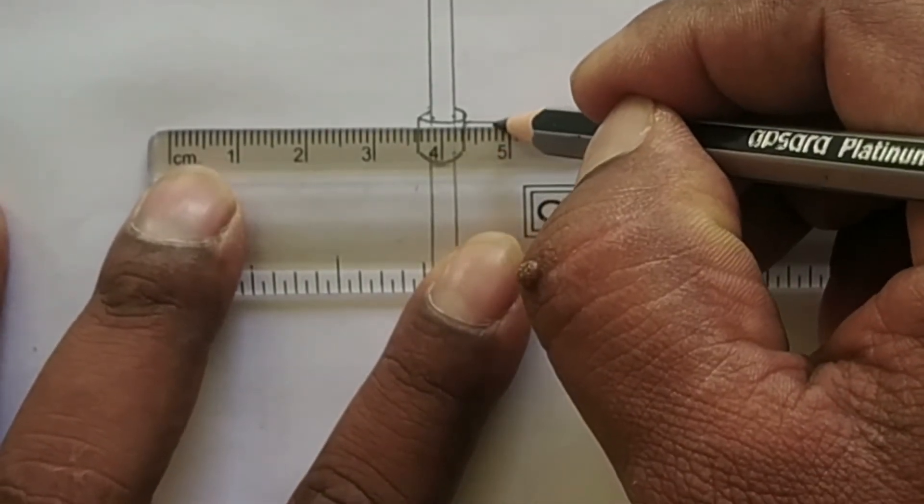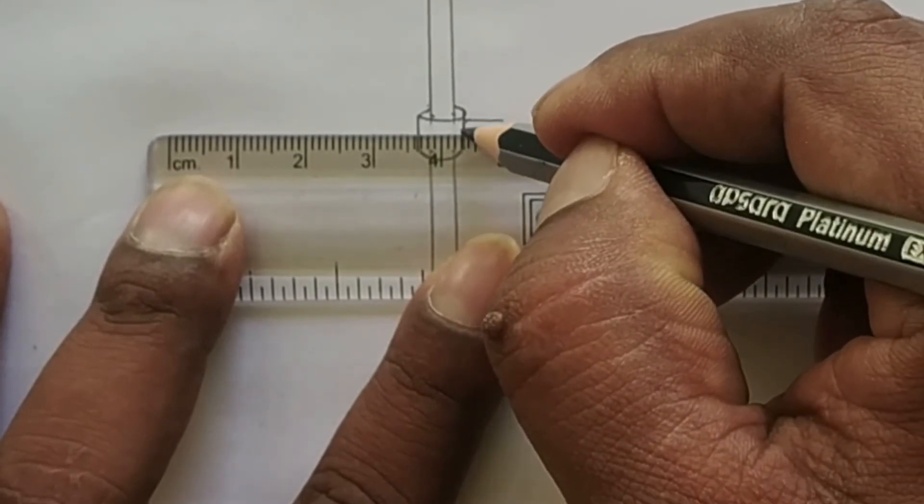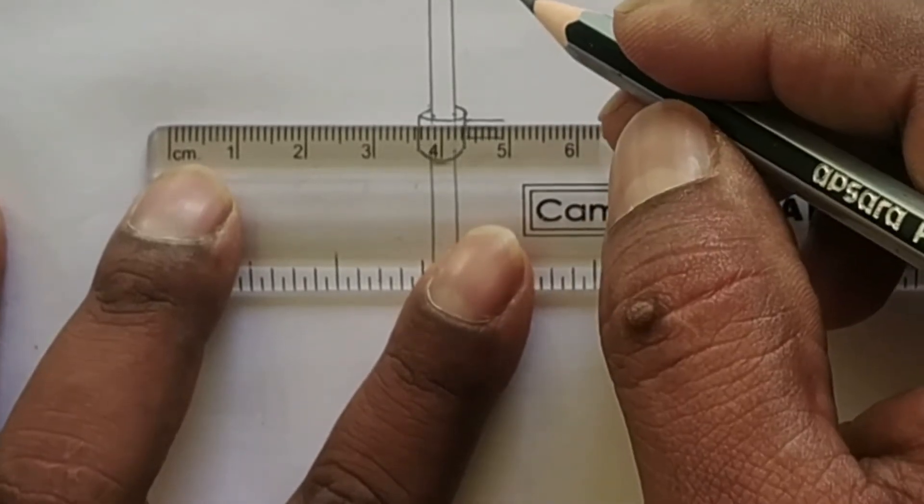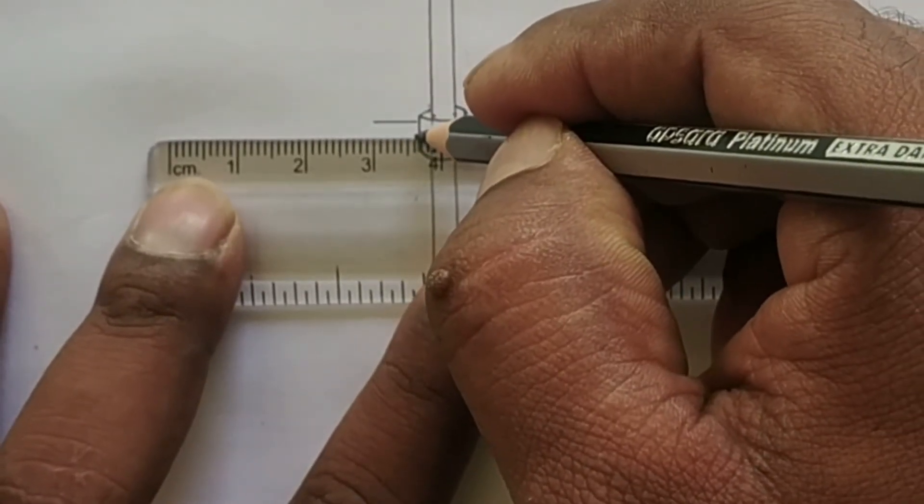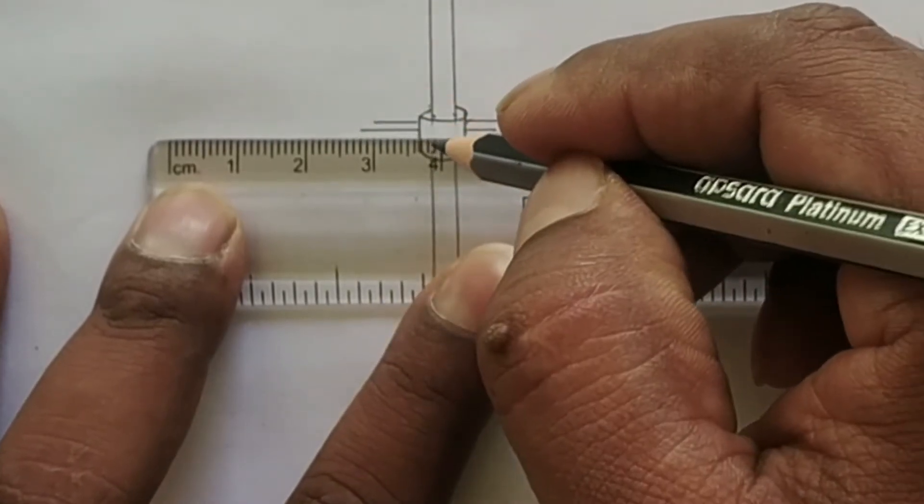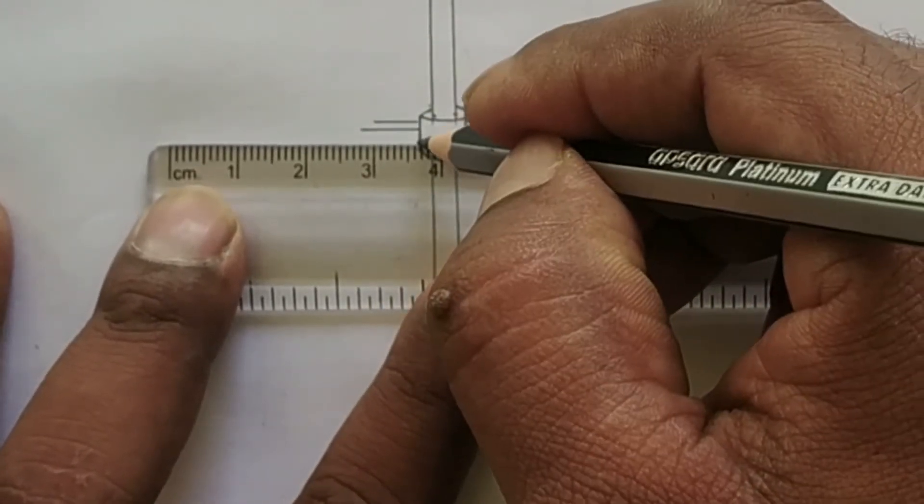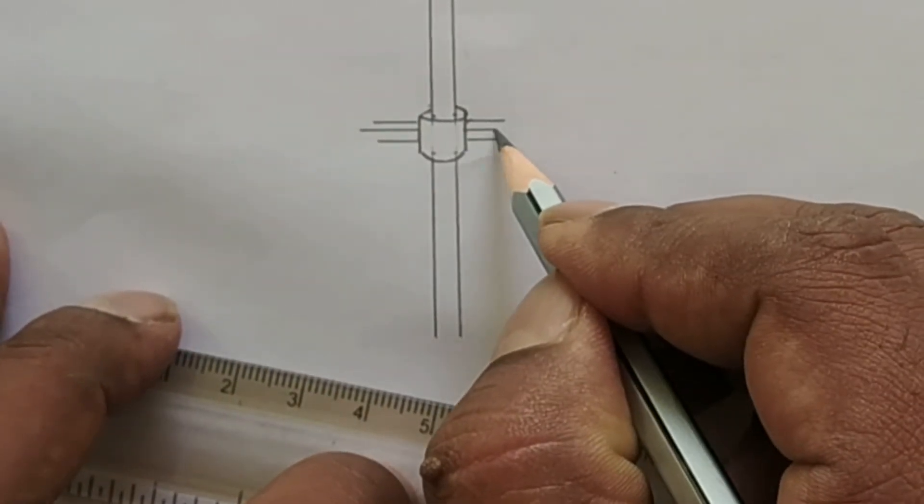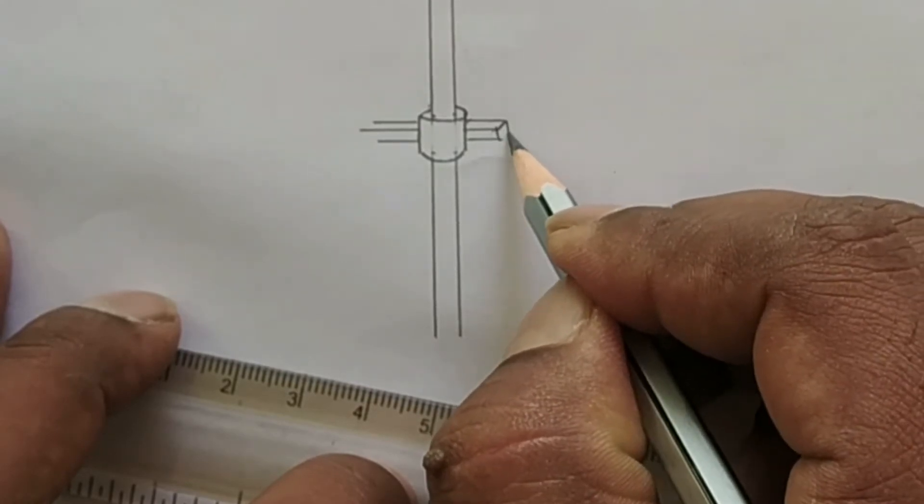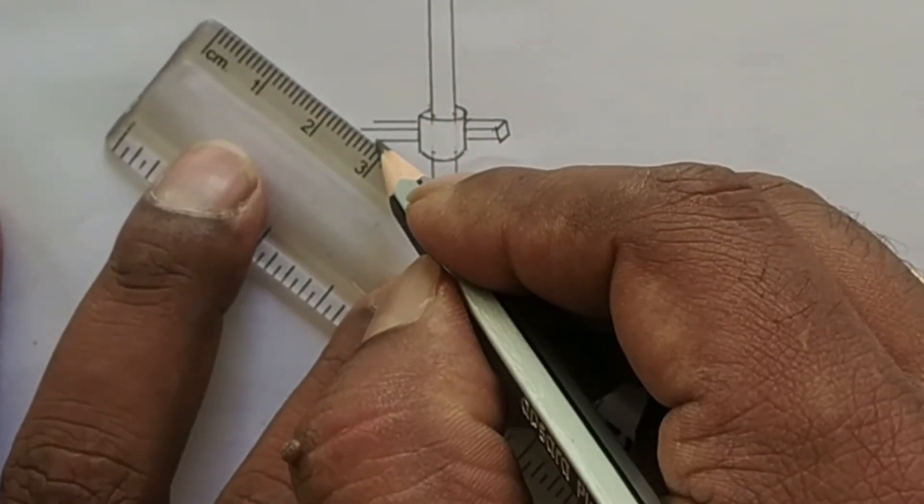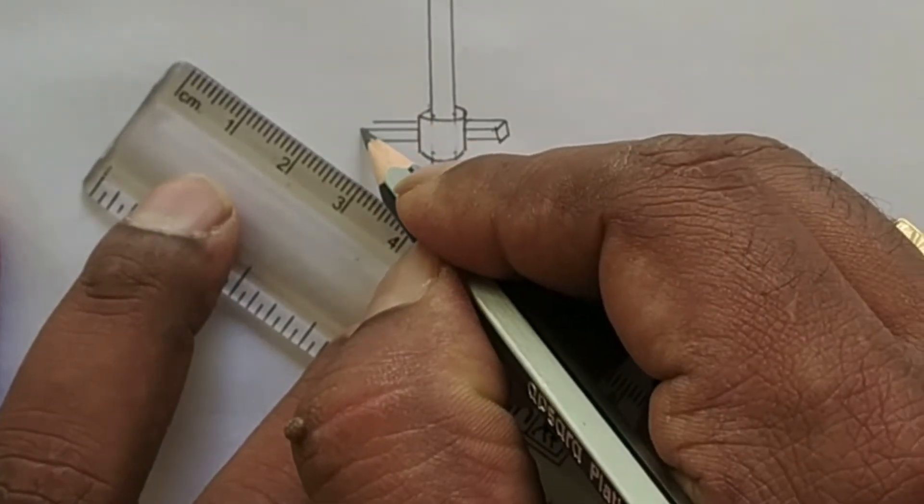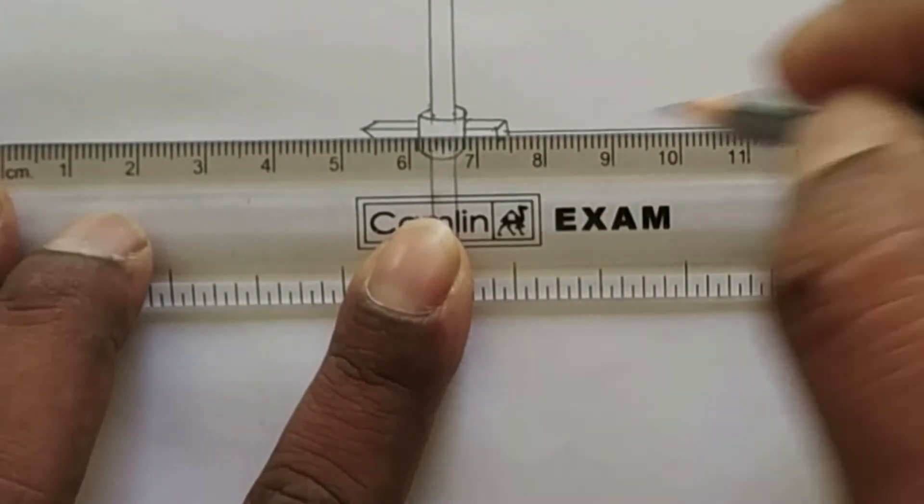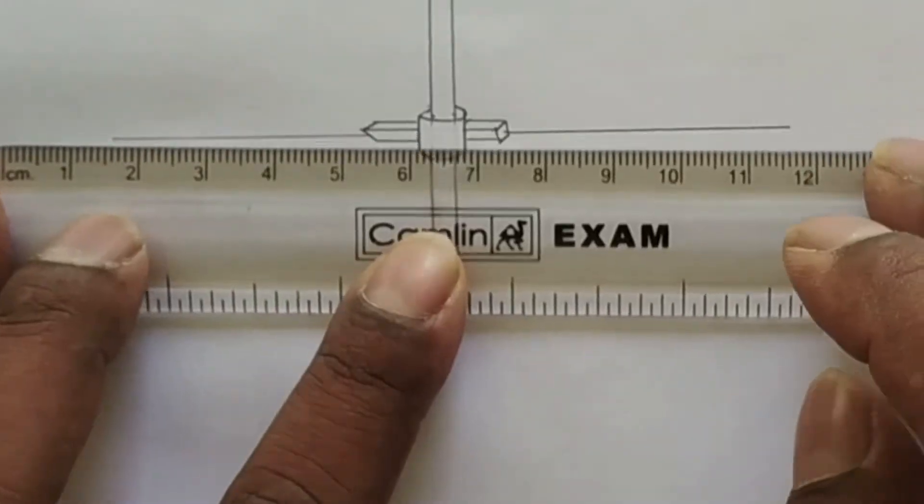One longer line and a shorter line, then again a longer line. Same thing on the other side - longer line, another longer line, and another shorter line. Now it's easy. This is the brush. Then draw a line on this side and another side.